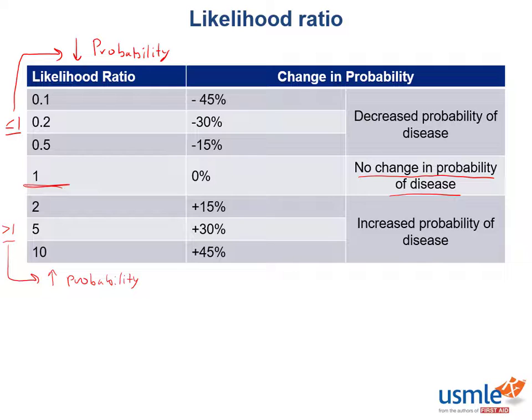Looking at the extremes of the spectrum, if you have a likelihood ratio of 10, this gives you a 45% increase in the probability of disease, while if you have a likelihood ratio of 0.1, this decreases your chance of disease by 45%.